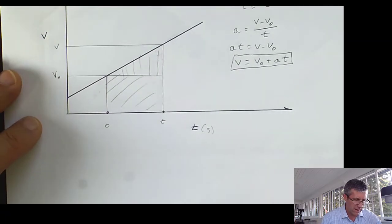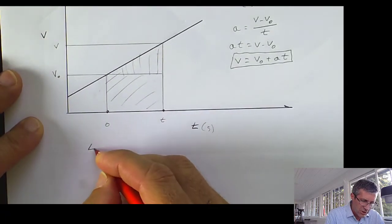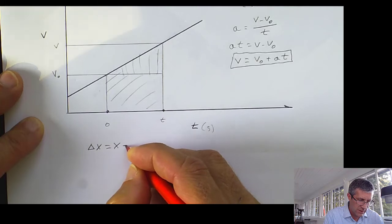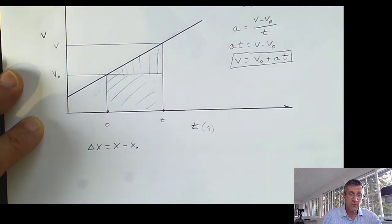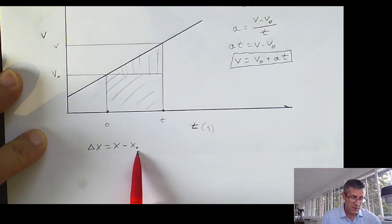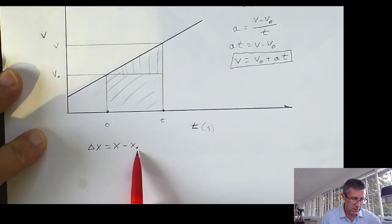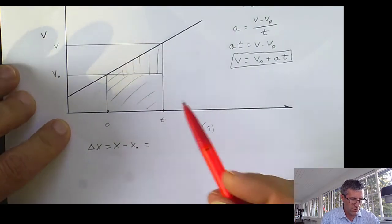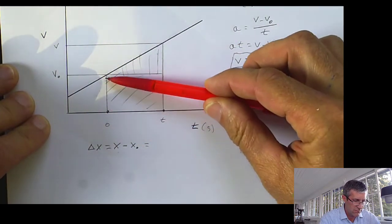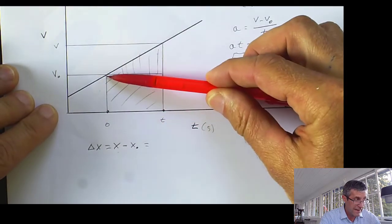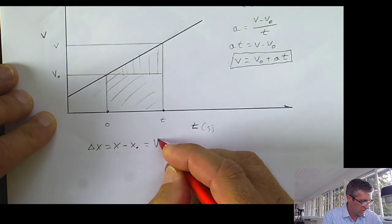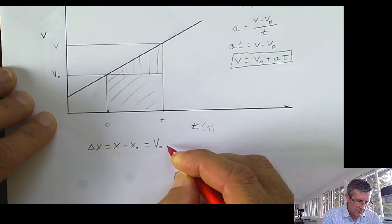So what's this going to look like mathematically? My change in displacement, X minus X₀, is going to be equal to the area under this curve. I have this box here, which is going to be V₀ height and time. So this is going to be V₀ times time.